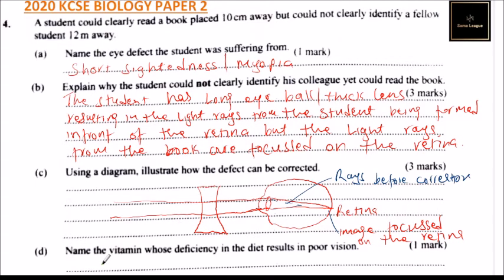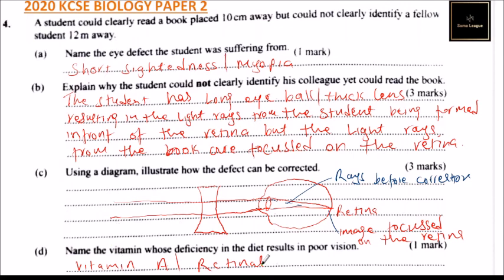Part D of the question: name the vitamin whose deficiency in the diet results in poor vision. That is vitamin A, or we call it retinol, which is found mostly in carrots. That is why one is advised to take carrots so that they can have good eye health. So that's how you answer that question.